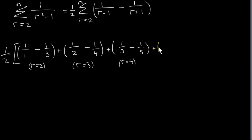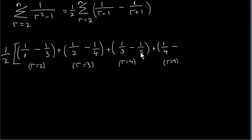You can see the pattern now — we don't even have to keep plugging values of r in. Look at the denominator of the first fraction in each term: we have 1, 2, 3, so the denominator of the first fraction in the next term should be 4. If you plug r equals 5 in, you get 1 over (5 minus 1), or 1 over 4. For the second fractions: denominators are 3, 4, 5 — increasing by 1 — so the next denominator should be 6. We could keep writing terms: the next term is 1 over 5 minus 1 over 7, and so on.